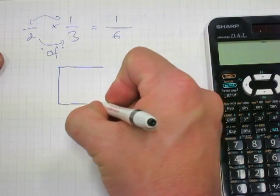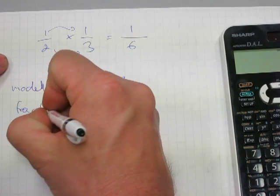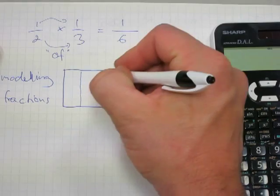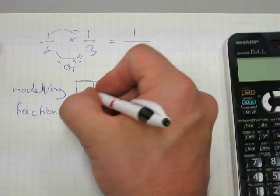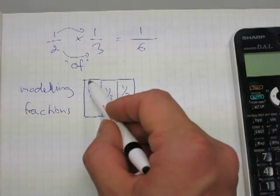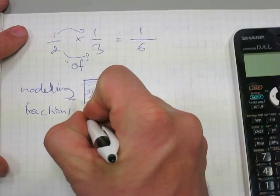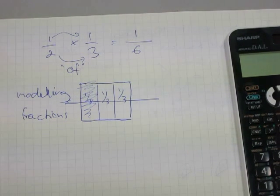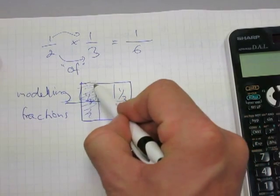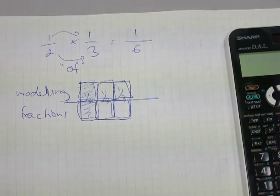Let me make a modeling fractions diagram for this. Imagine this is a chocolate bar with the thirds clearly visible — here are the three thirds. One-third of a chocolate bar is this cross-hatched area. When we're talking about one-half of one-third, we take half of that one-third piece.